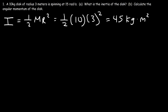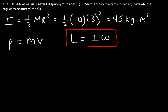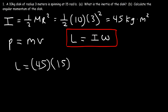Now let's calculate the angular momentum of the disc. Linear momentum is mass times velocity. So angular momentum is inertia times omega. We have the inertia — it's 45 — and the angular speed is 15. So it's 45 times 15, which is 675. And that's it for part B.